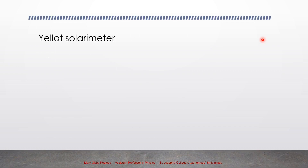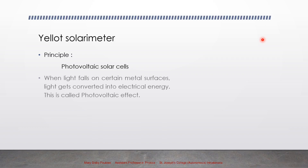The next instrument is the Yellott solarimeter. Its working principle is based on the photovoltaic effect. When light falls on certain metal surfaces, the light gets converted into electrical energy. This is called the photovoltaic effect.